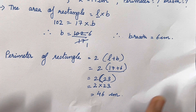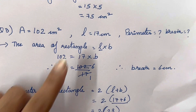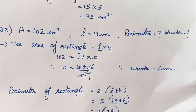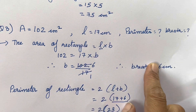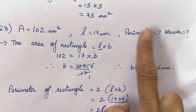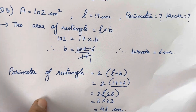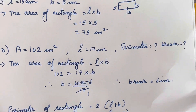Over here centimeter square will not come because we have found the perimeter. Area was already given in the question as 102 centimeter square, length was given, breadth we found, and then we found the perimeter as well. So in this way you have to solve question number three. Let's move on to question number four.